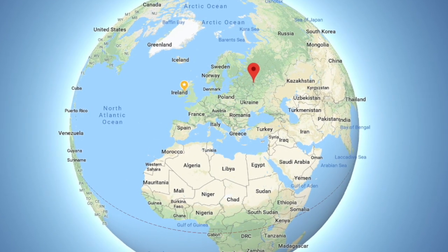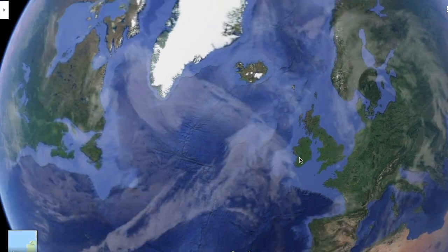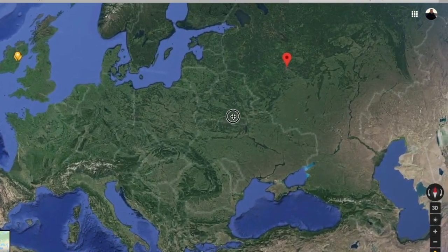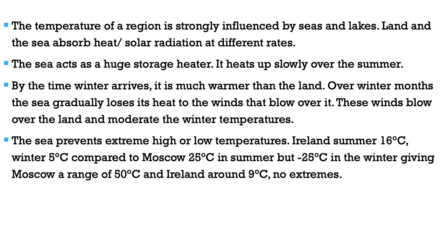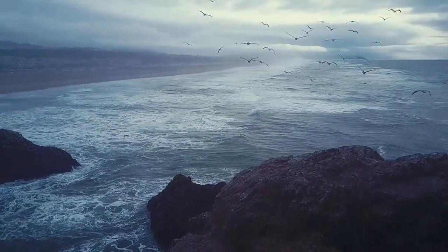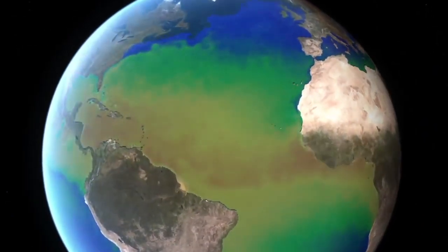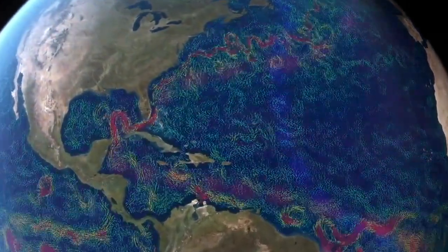Ireland and Moscow are on roughly the same latitude, yet Ireland has an average summer temperature of 16 degrees Celsius and a mean winter temperature of 1 to 5 degrees Celsius. Moscow can reach 25 degrees Celsius in summer but drop below minus 25 degrees in winter, giving a range of 50 degrees, while Ireland has a range of only about 9 degrees. Ireland is surrounded by water, and that large mass of water regulates temperatures so there are no extremes. Water heats up and cools down much more slowly than land.